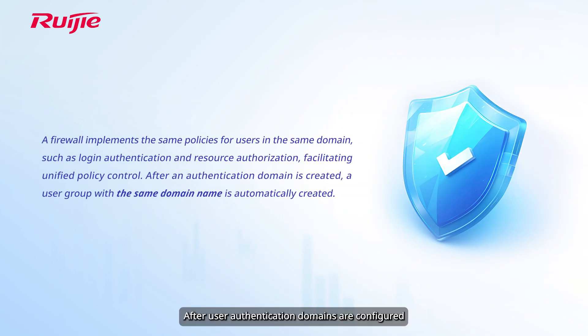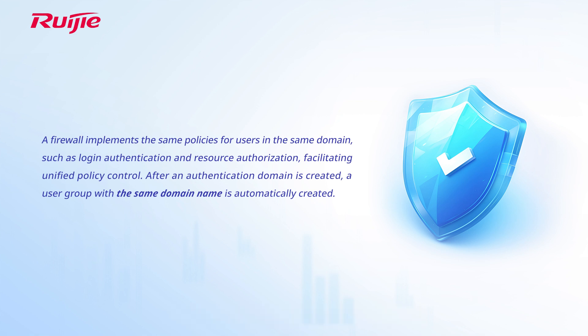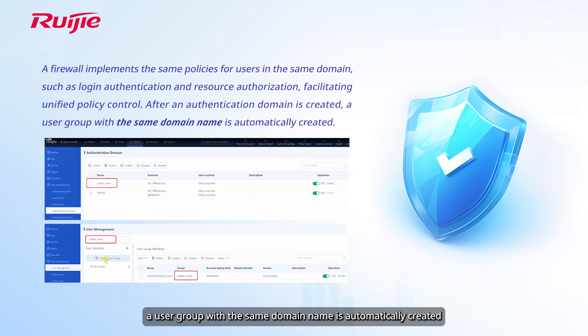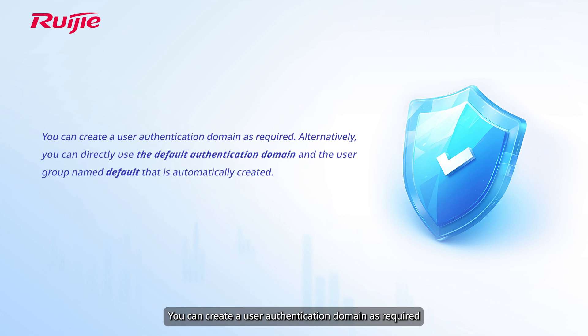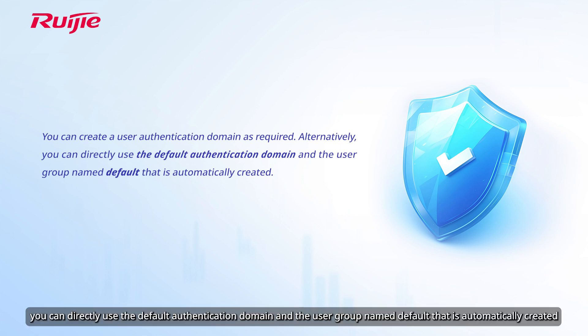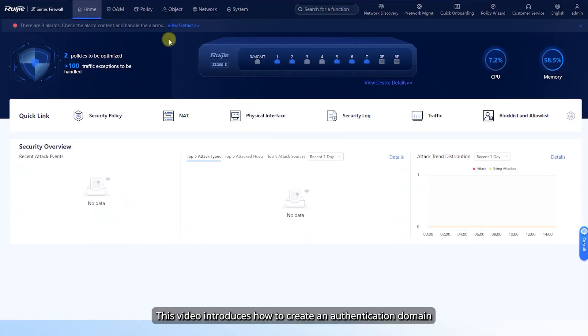After user authentication domains are configured, a firewall implements the same policies for users in the same domain, such as login authentication and resource authorization, facilitating unified policy control. After an authentication domain is created, a user group with the same domain name is automatically created. You can create a user authentication domain as required, or directly use the default authentication domain and the user group named 'default' that is automatically created. This video introduces how to create an authentication domain.